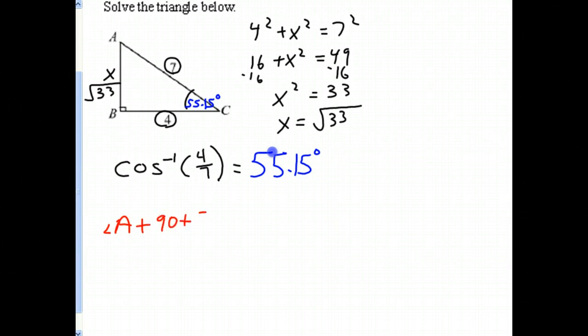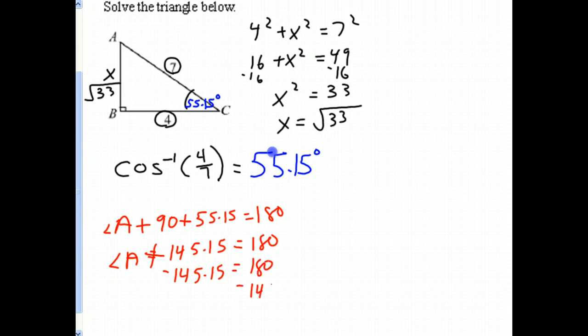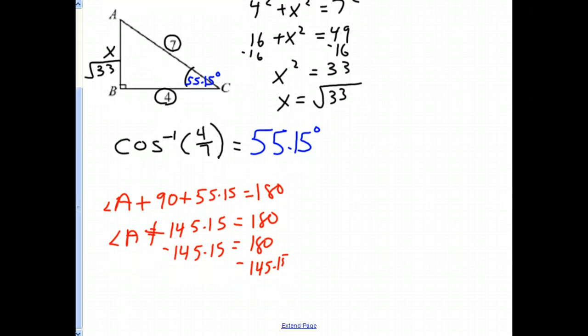So angle A plus 145.15, if I subtract minus 145.15, I will get an answer of angle A is equal to 34.85 degrees.